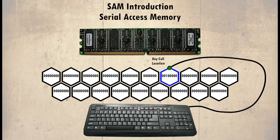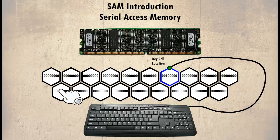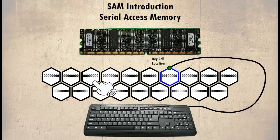Now the CPU has to pick up the binary code. In serial access memory, it has to check each cell starting at the beginning. If it does not find the key cell location, it moves on to check the next cell, then the next, and so on, until it finds it.